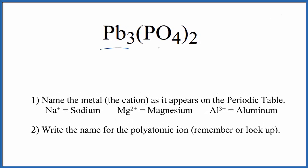To write the name for Pb₃(PO₄)₂, we first need to recognize that Pb here, lead, is a transition metal, and PO₄ is a polyatomic ion. So we have a transition metal and a polyatomic ion.